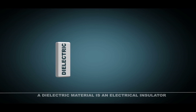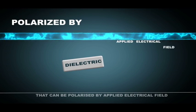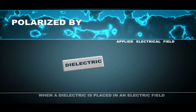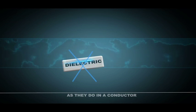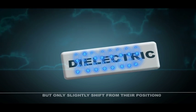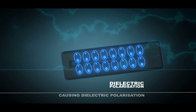A dielectric material is an electrical insulator that can polarize by an applied electric field. When a dielectric is placed in an electric field, electric charges do not flow through the material as they do in a conductor, but only slightly shift from their average equilibrium positions, causing dielectric polarization.